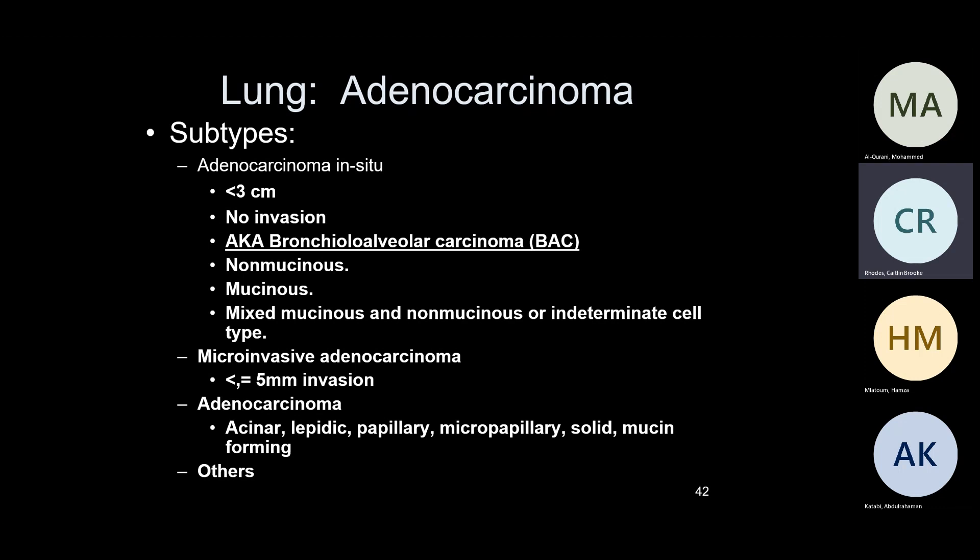We also have minimally invasive adenocarcinoma — just like adenocarcinoma in situ, but invasion is less than 5 millimeters. This classification came around 2011-2012. Why is this important? Because patients with adenocarcinoma in situ or minimally invasive adenocarcinoma do very well. These are peripheral lesions; you do a lobectomy with clear margin and the patients will almost have a normal lifespan. That's why this diagnosis is important.